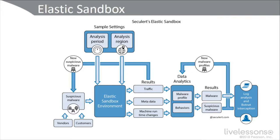In step six, if the executable's behavior is not known but it's conclusively identified as malware, then a profile is defined. Seculert immediately notifies customers and partners through the dashboard and API. In addition, the new malware profile becomes an important learning set for Seculert's machine learning algorithm and traffic log analysis. In step seven, if the malware is determined to be a botnet, the data is also passed on to the botnet interception module, which monitors traffic and identifies users and IP addresses.